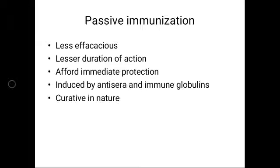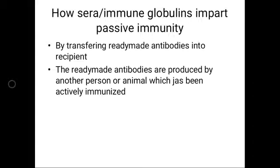Acutely ill, debilitated, or immunocompromised individuals may not be able to generate adequate antibody response; therefore they will require passive immunization and the curative action it provides. The sera or immunoglobulins impart immunity by the transfer of ready-made antibodies into the recipient. These ready-made antibodies are prepared using the body of another person or animal that has been actively immunized.